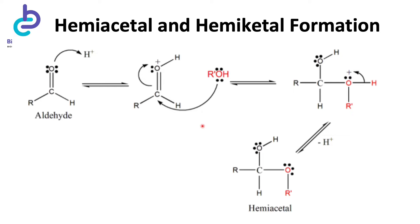Before jumping into cyclic carbohydrate hemiacetals and hemiketals, let us quickly remember how they are formed when an alcohol oxygen adds to the carbonyl carbon of an aldehyde. Hemiacetals are formed through the nucleophilic attack of the hydroxyl group of the alcohol at the electrophilic carbonyl group of either an aldehyde or a ketone. Given that alcohols are weak nucleophiles, the attack is usually advanced by the addition of a proton to the carbonyl carbon. When this reaction happens with an aldehyde, the resulting product is a hemiacetal; when it takes place with a ketone, the resulting molecule is referred to as a hemiketal.